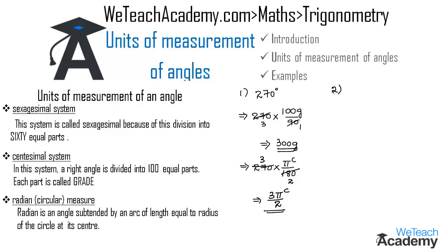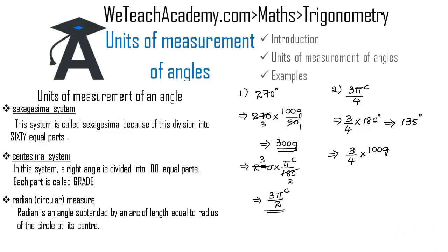The second example is to convert 3πᶜ/4 into the sexagesimal and centesimal systems. To convert to the sexagesimal system, multiply (3/4) by 180°, which gives 135°. To convert to the centesimal system, multiply (3/4) by (100G / 90), which simplifies to 100G/120 — approximately 150G. Thus 3πᶜ/4 is converted into both the sexagesimal and centesimal systems.